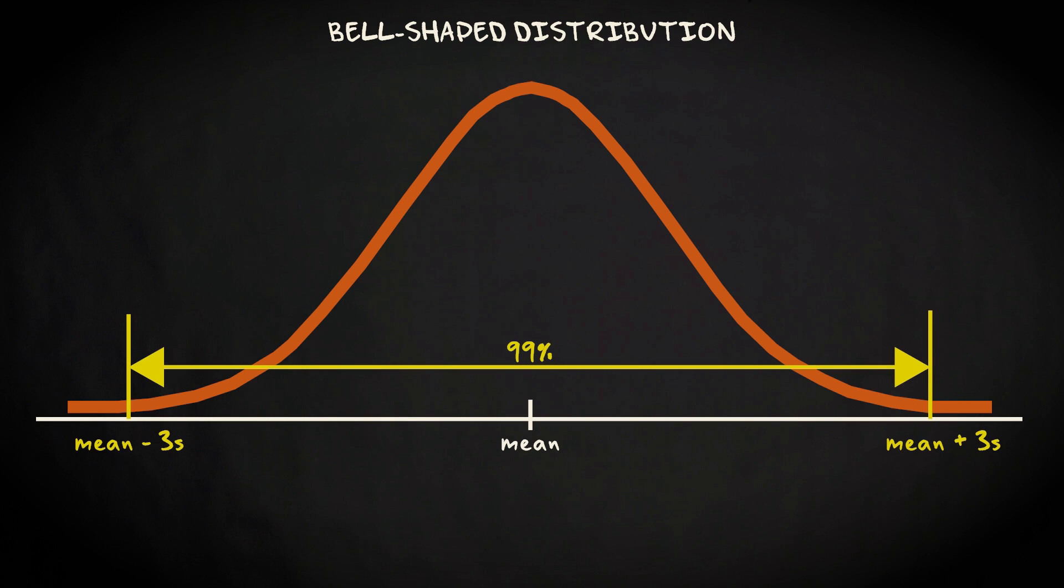This means that for this type of distribution, a z-score of more than 3 or less than minus 3 can be conceived of as rather exceptional.